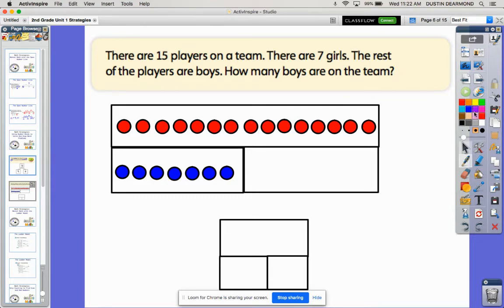I'm going to underline some information while I read. If you want to close your eyes and listen to the story, you can. There are 15 players on a team. I know 15 players is important, so I'm picturing them - maybe basketball players or football players or softball players. There they are standing together in their team uniforms, 15 of them. There are seven girls. The rest of the players are boys. How many boys are on the team?